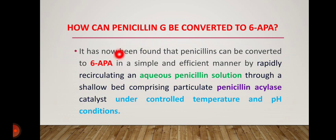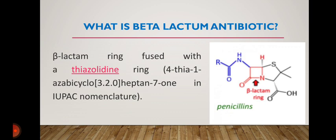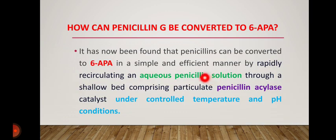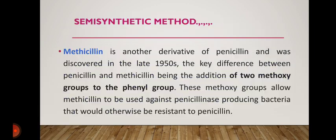Now, how is 6-APA (6-aminopenicillanic acid) prepared? Simply take an aqueous penicillin solution and add the enzyme penicillin acylase, which helps to break down the penicillin ring. Under controlled temperature and pH, this ring breaks down and produces 6-APA. If you consider the reverse: take 6-APA and use acylase enzyme, it will break from that position and convert back.